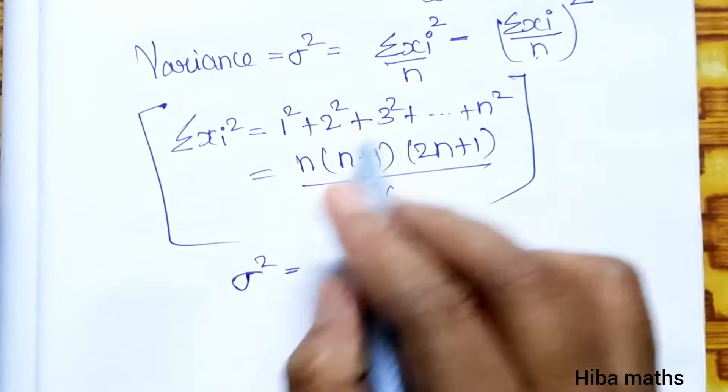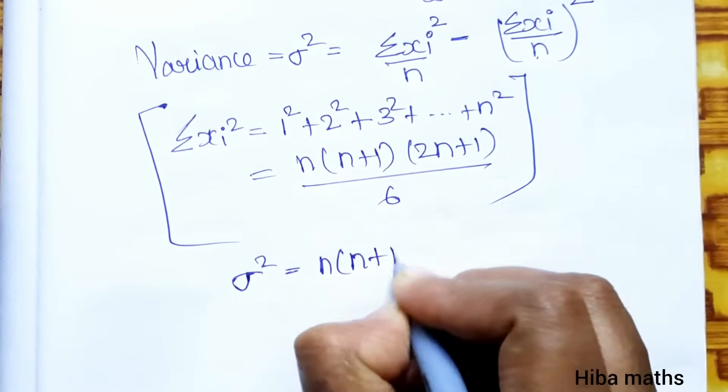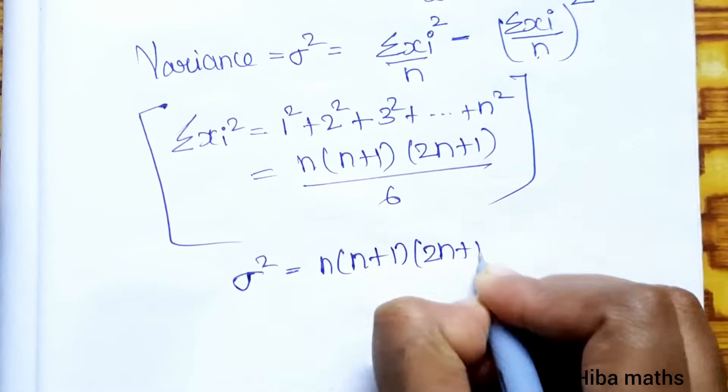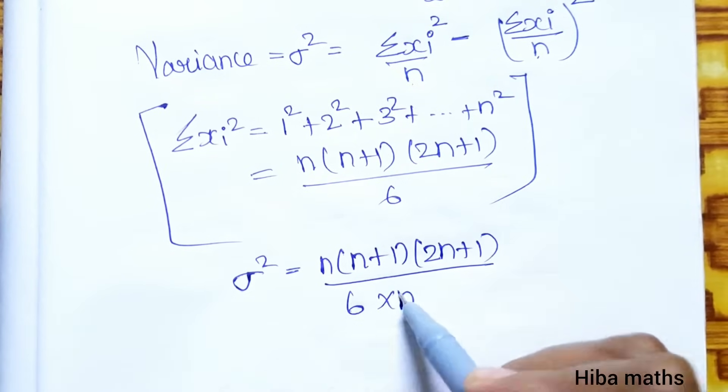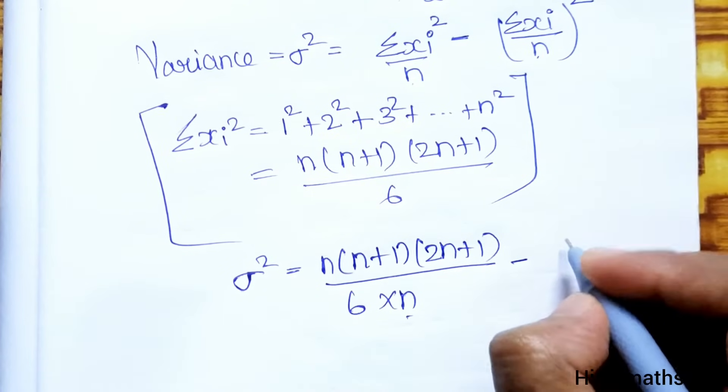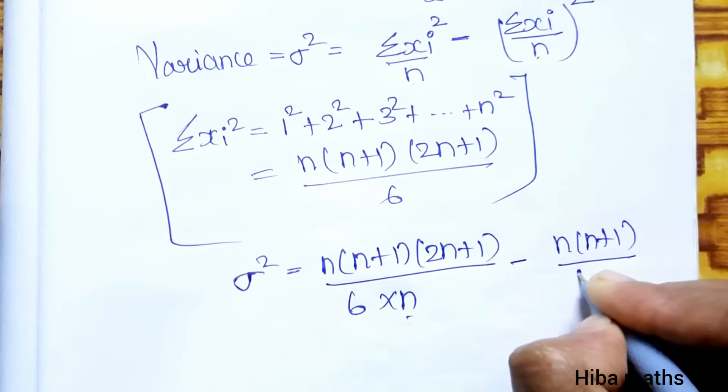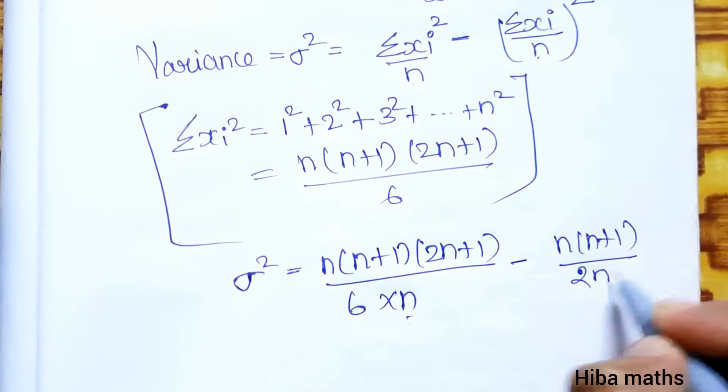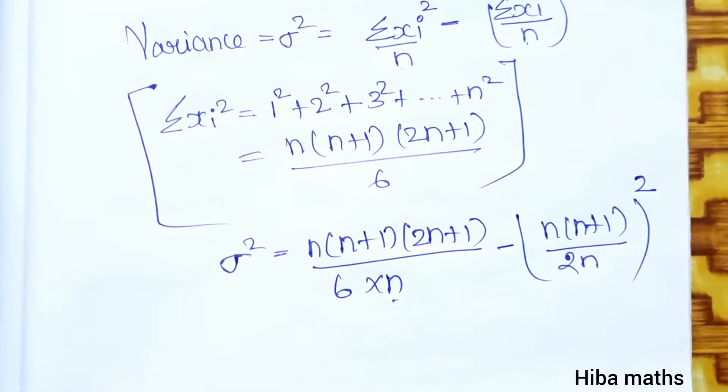Variance is equal to this formula. n into n plus 1 into 2n plus 1 divided by 6 into n, minus summation of x i. Summation of x i, summation of natural numbers n into n plus 1 by 2, and again here is n and whole square. There is a whole square.